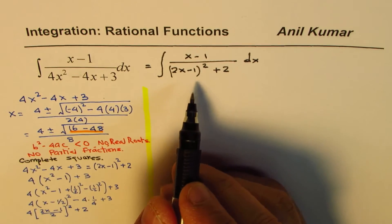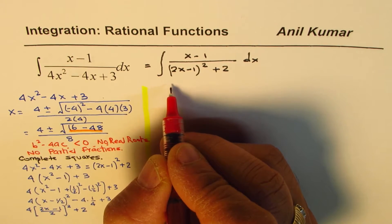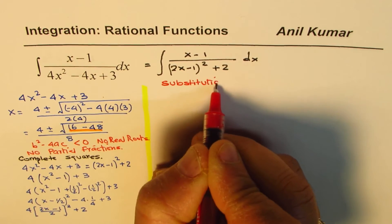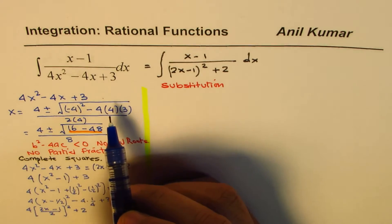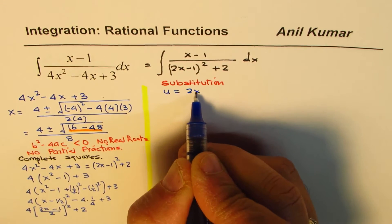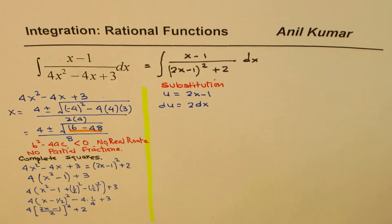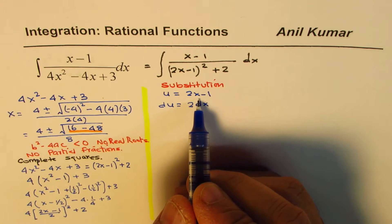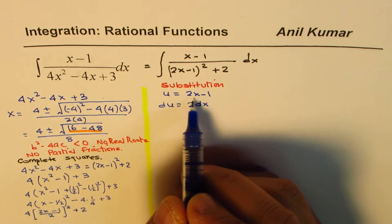To proceed, we need to adopt the substitution method. It becomes tricky when you cannot factor the denominator. So we let u equal 2x minus 1, which gives du equals 2 dx. We also need to express x minus 1 in terms of u. Since u equals 2x minus 1, we get x equals the quantity u plus 1 divided by 2.